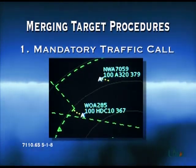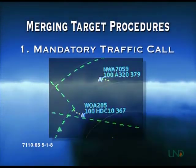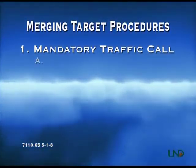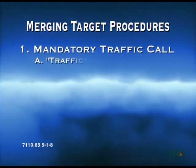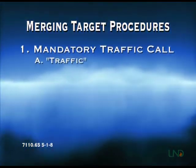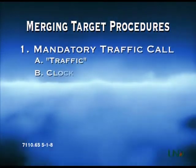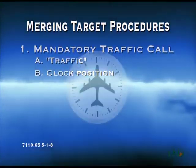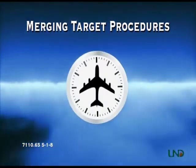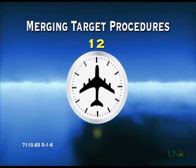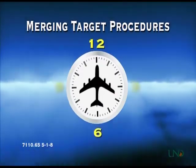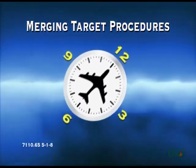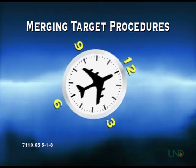The traffic call contains six elements, which must be said in the following order. First, the word traffic. Second, the location of the traffic relative to the aircraft you are talking to, given as a clock position — 12 o'clock, 6 o'clock, and so on. Remember, this is relative to the aircraft, not to you.